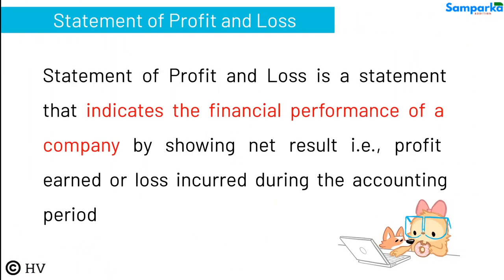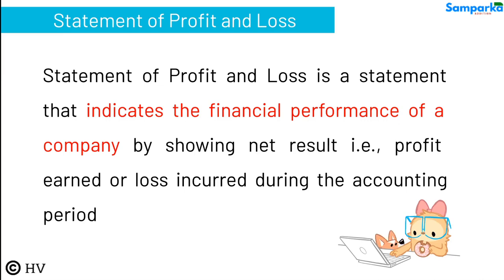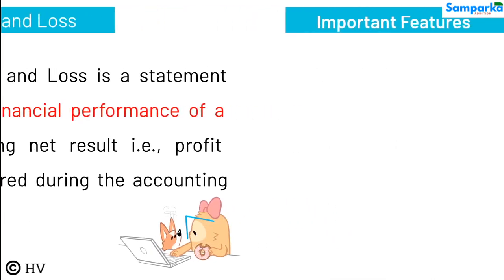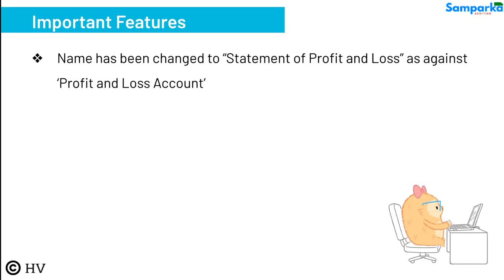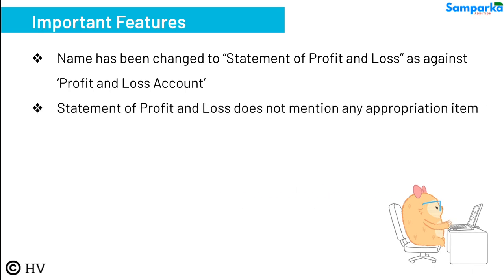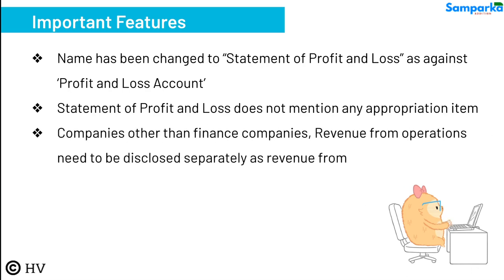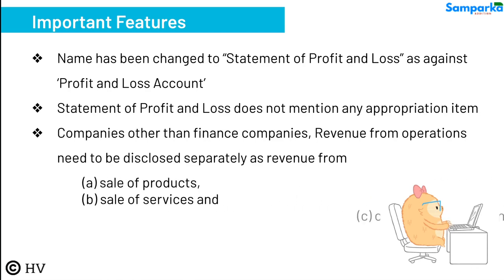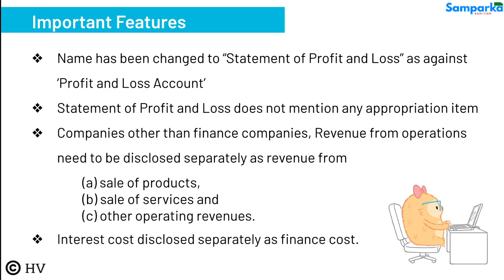Statement of Profit and Loss is a statement that indicates the financial performance of a company by showing the net result — that is, profit earned or loss incurred during the accounting period. The name has been changed to 'Statement of Profit and Loss' from 'Profit and Loss Account.' The Statement of Profit and Loss does not mention any appropriation item. For companies other than finance companies, revenue from operations needs to be disclosed separately as revenue from sale of products, sale of services, and other operating revenues. Interest cost is disclosed separately as finance cost.